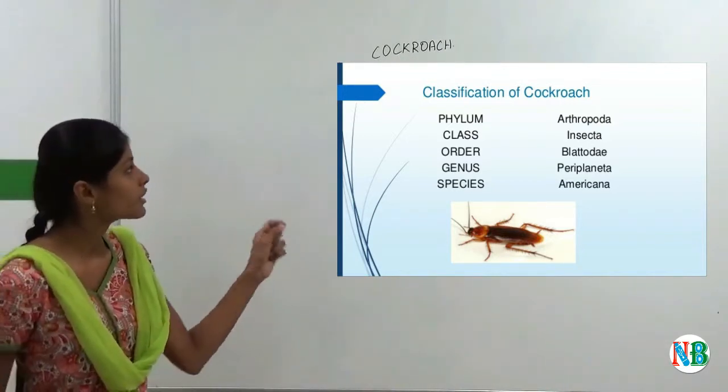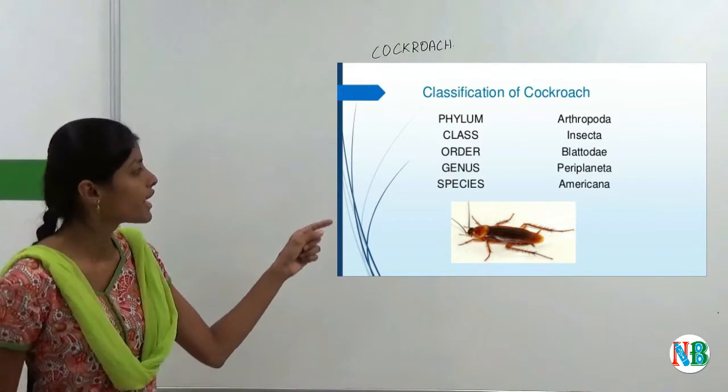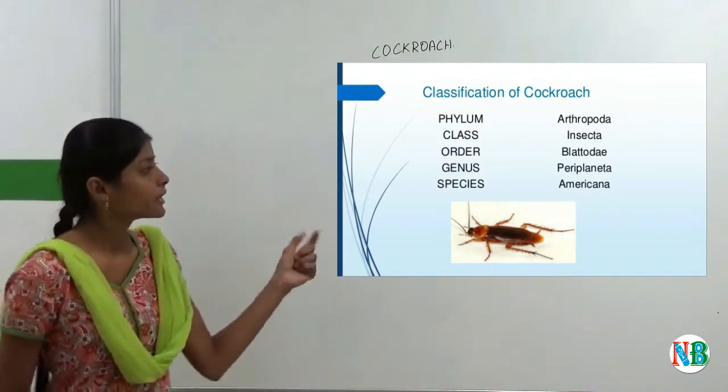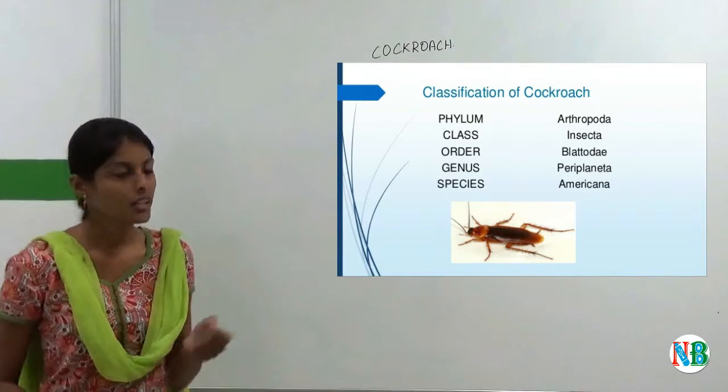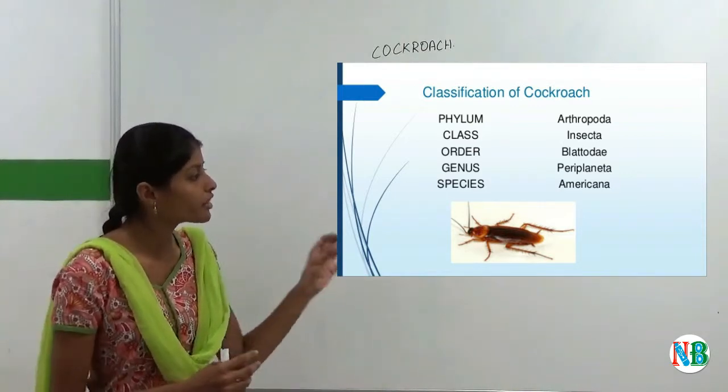And you can see in this image, cockroaches are included under the phylum Arthropoda. So from the term itself, we can see arthro means joints. So their limbs are made up of many joints.